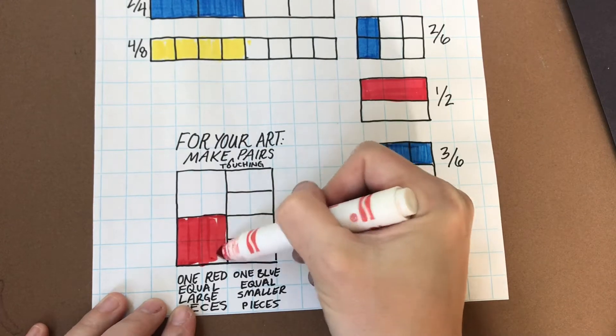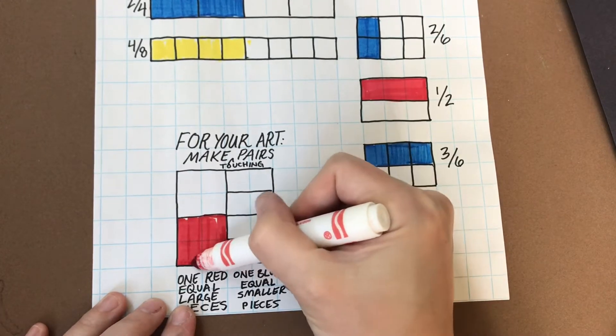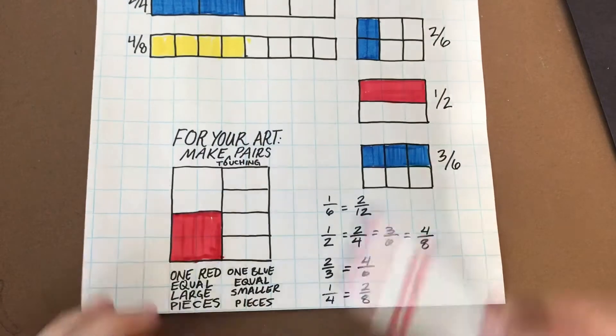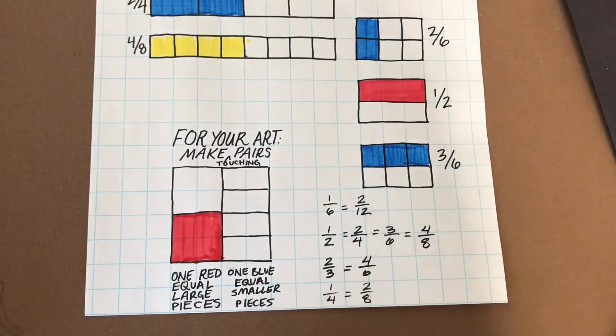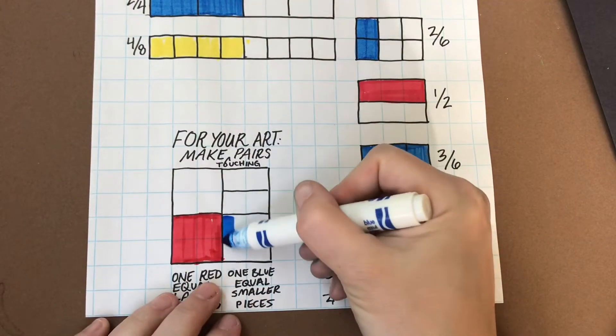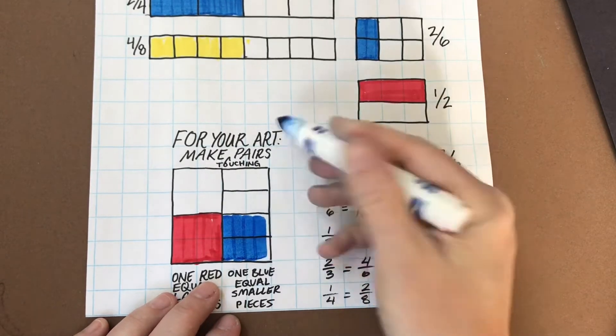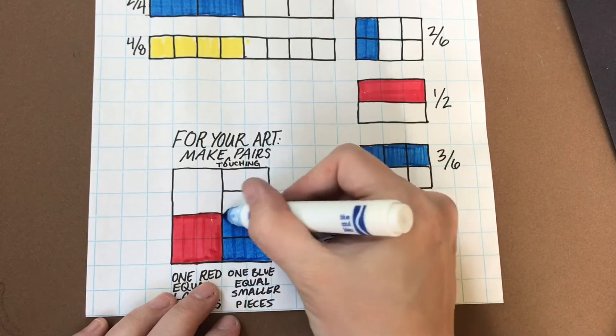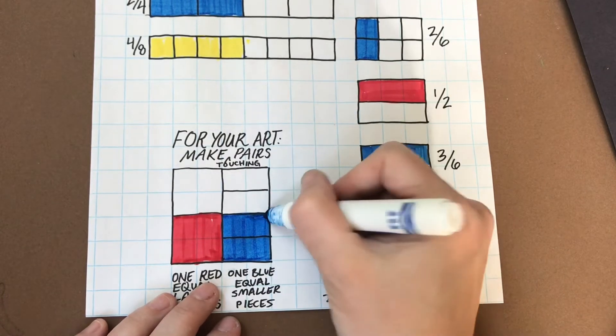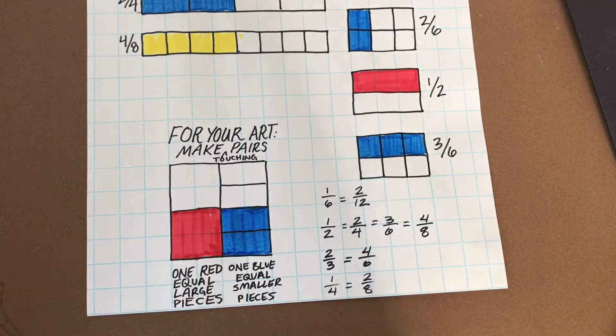Your first box or rectangle will be colored in red to be whichever fraction you like. Here I'm doing one half. And then the other adjoining fraction will be colored in blue. Here I'm doing two quarters. So that is one pair. Can you do three of those on a piece of paper?